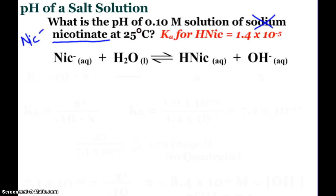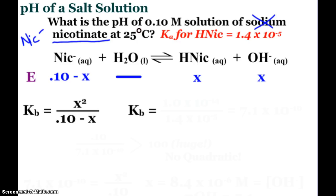I set up an ICE table. I have a 0.1 molar solution of the nicotinate ion to start. Getting to our equilibrium expression: 0.1 minus X for nicotinate, and X's on the product side, ignoring water. Kb equals X squared over 0.1 minus X.